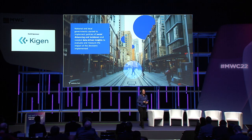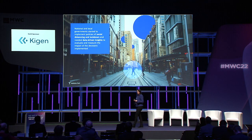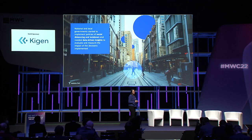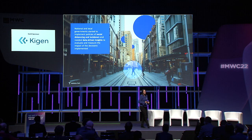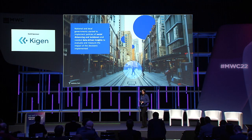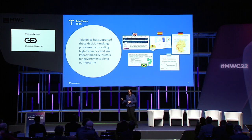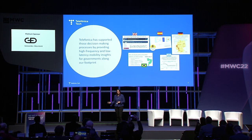In the case of Telefonica, as it happened with other operators in different parts of the world, we started to collaborate with governments, always supported by GSMA, because it was very clear that our mobility patterns were very important in the decisions that governments were making — both in terms of understanding how the virus was spreading and also the impact of the different lockdowns they needed to decide. We collaborated with governments in the UK, Germany, Spain, Brazil, and different countries of Hispanic America.